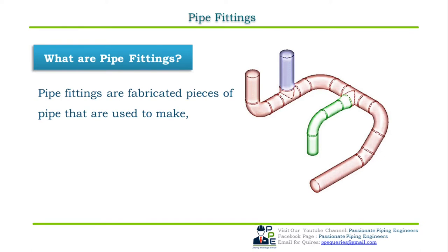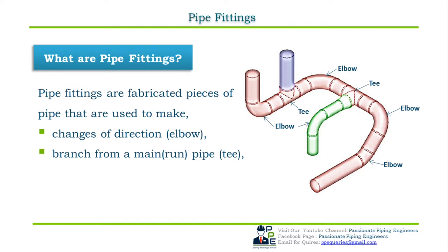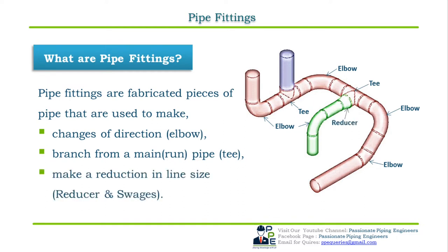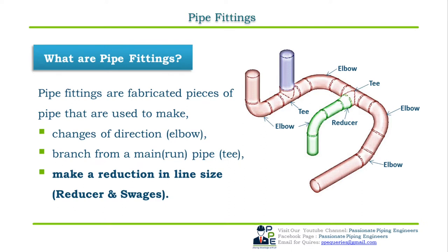Pipe fittings are fabricated pieces of pipes used to make a change of direction (elbows), to take a branch from a main pipe run (tees), or to make a reduction in the line size. In the previous two parts we covered fittings for changing direction and branching. The topic of this video is pipe fittings used for changing the line size — making a reduction in the line size.